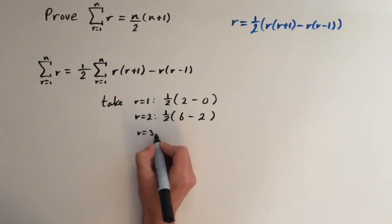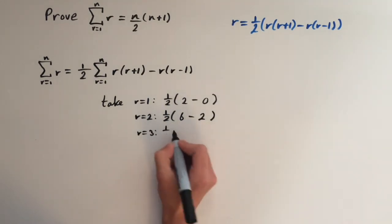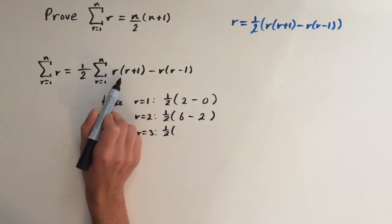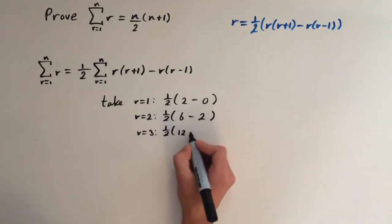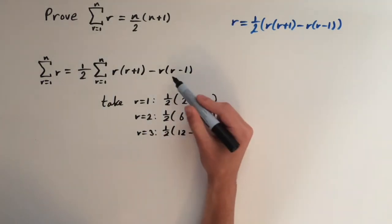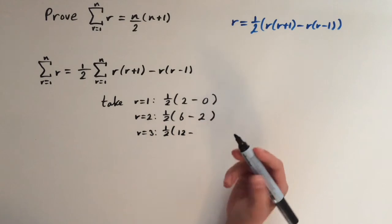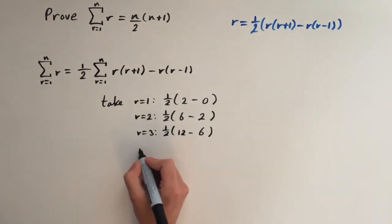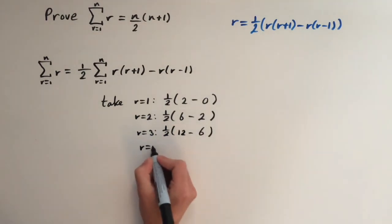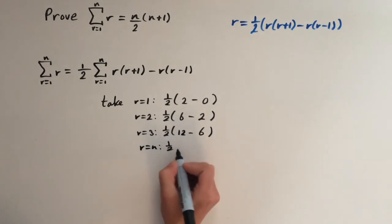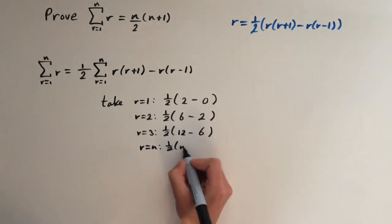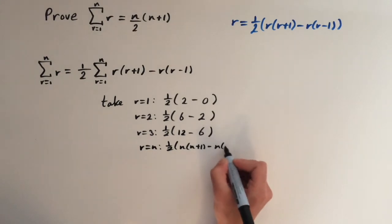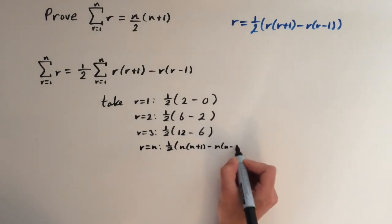For r equals 3: one half times 3 times (3 plus 1), so 3 times 4 which is 12, minus 3 times (3 minus 1), so 3 times 2 which is 6. And for the last term: one half times n times (n plus 1) minus n times (n minus 1).